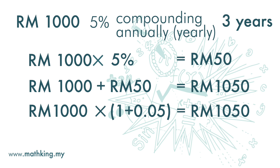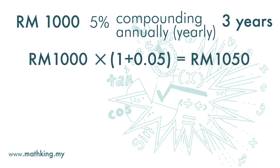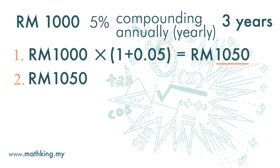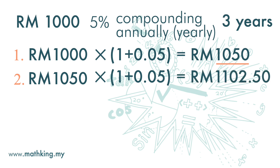So by the end of the period, your money becomes P times 1 plus R, where P is the principal and R is the interest rate. Now for compounding interest, what happens is this: this whole amount is again earning interest for the second year. So this 1,050 becomes the principal at the beginning of the second year. And by the end of the second year, the money that you will get is 1,050 times 1.05 again, and we get RM1,102.50.